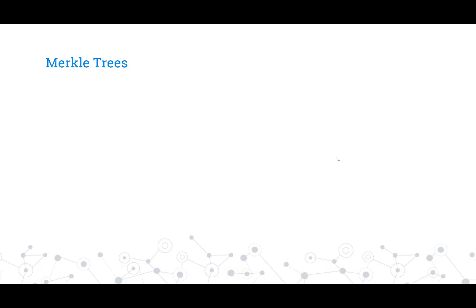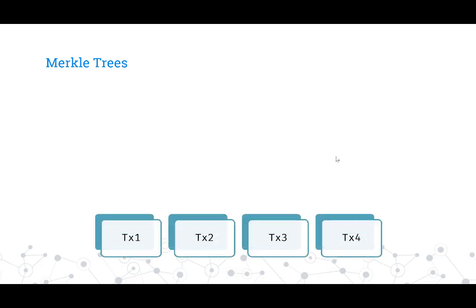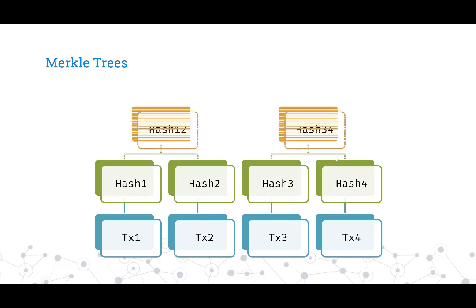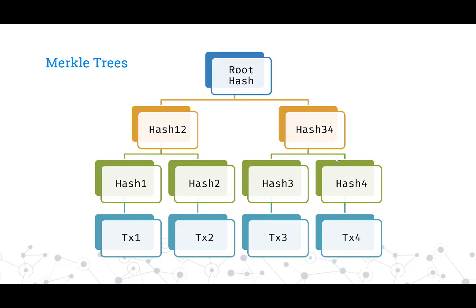Another important concept is Merkle trees. Merkle trees help us authenticate many different pieces of data together with a single hash. Say we have four transactions — tx1, tx2, tx3, and tx4. We take the hash of each transaction, then append hash1 and hash2 and take a hash of that combined data called hash12. Similarly we append hash3 and hash4 to get hash34. Then we hash hash12 and hash34 together to get the root hash. We can reach this root hash only if we have those exact four transactions in that exact order — so with the root hash we can verify that exactly those four transactions occurred.